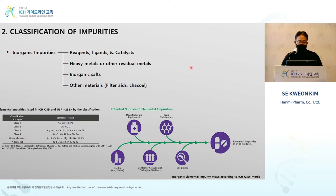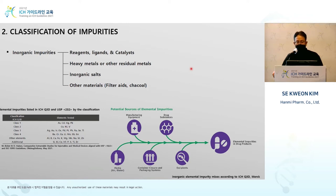Next is inorganic impurities. Like organic impurities, these also include reagents, ligands, catalysts, and additionally heavy metals, residual metals, inorganic salts, and other materials including filter aid and charcoal. Filter aid and charcoal are used during the manufacturing process, and their characteristics are well defined, so control is not difficult. However, for reagents, ligands, catalysts, and heavy metals — essentially metals — they are also controlled by ICH Q3D on elemental impurities.